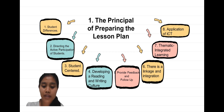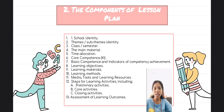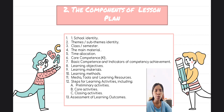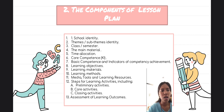That's all about the principle of preparing the lesson plan. Hello, I'm Adriana Bombo and now I would like to continue the presentation about the components of the lesson plan. The components of the lesson plan consist of 13 parts. Number one: school identity, namely the name of the school where teaching is carried out. Number two: identity of the subject. Number three: class and semester. Number four: the main material. Number five: time allocation, determined in accordance with the needs for achieving basic competency.